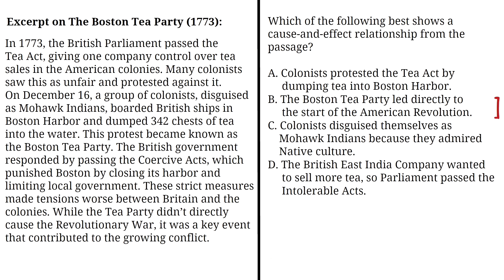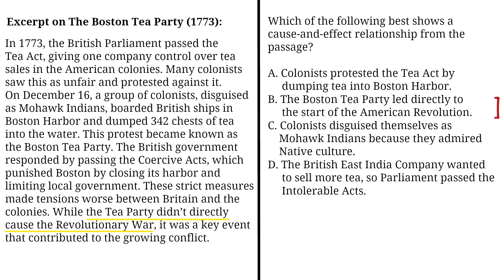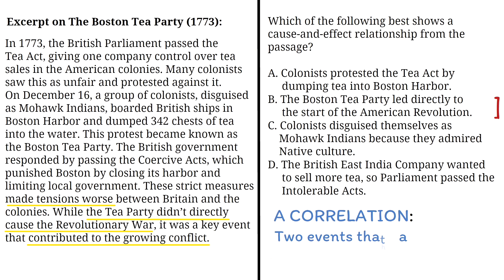Option B says: The Boston Tea Party led directly to the start of the American Revolution. That's incorrect. Although this may look like a cause-and-effect, it is not accurate based on the passage. The passage says that the Tea Party didn't directly cause the Revolutionary War. The Tea Party rather made tensions worse and contributed to it, but it wasn't the one thing that started the war. So this is more of a correlation — two events that happened one after the other, but not a direct cause.